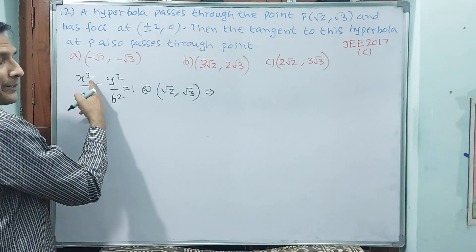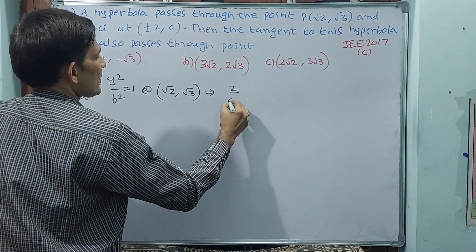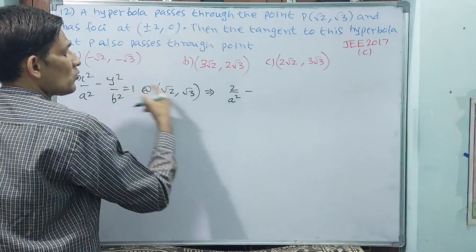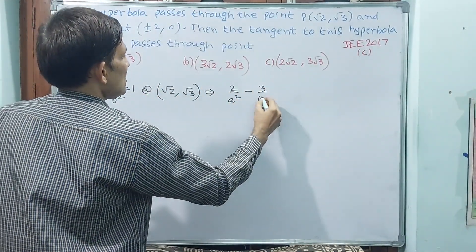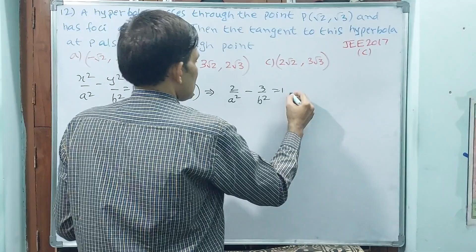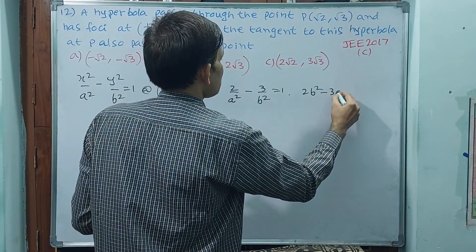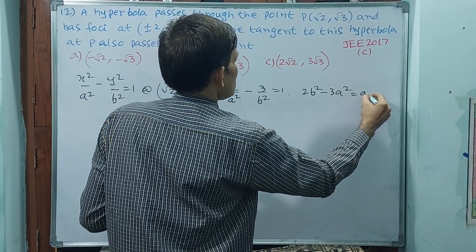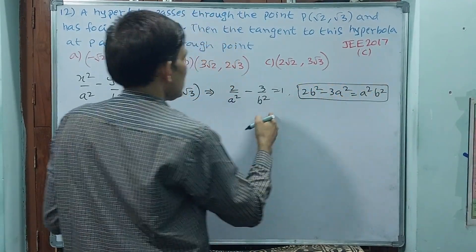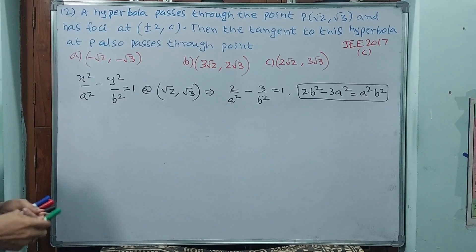Substituting: root 2 squared is 2, by a squared, minus root 3 squared is 3, by b squared equals 1. This gives us the equation: 2b squared minus 3a squared equals a squared times b squared. This is equation one.